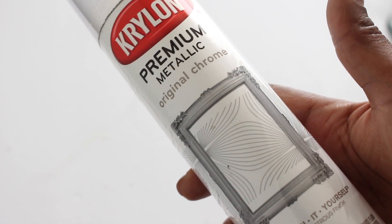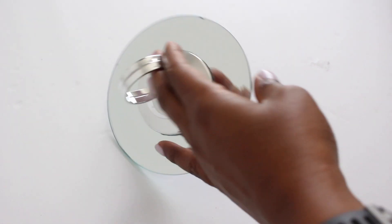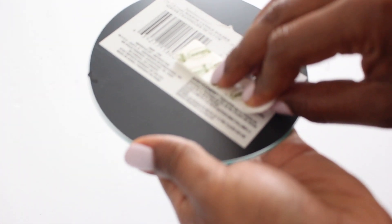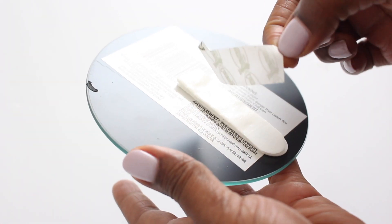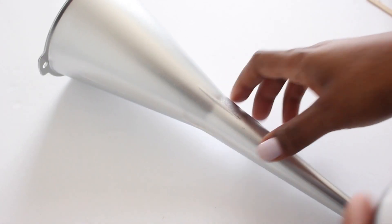The last thing that I need to do is just put a command strip on the back, take the other piece off, and then hang this part on the wall.